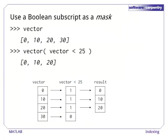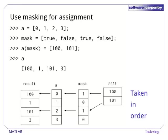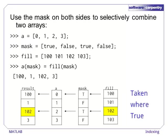Another term for an index from a comparison is a mask, because the Boolean array masks all the elements of a vector that fail the condition. We can use Boolean masking on the left side of assignment as well, though we have to be careful about its meaning. If we use a mask directly, elements are taken in order from the source on the right and assigned to elements corresponding to true values in the mask.